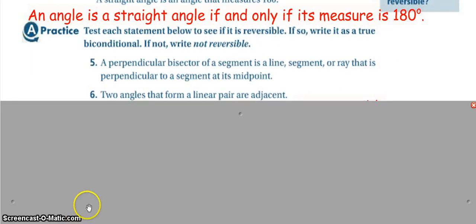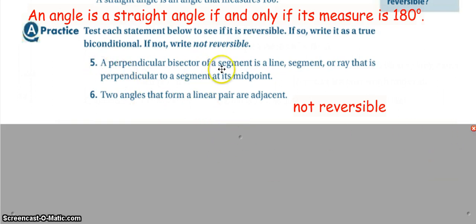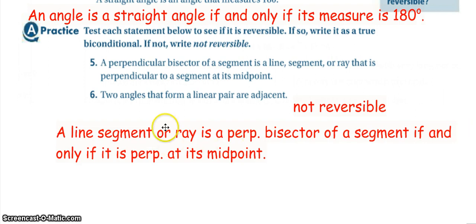Look at problems five and six to decide if they are reversible. For number six: two angles that form a linear pair are adjacent — but that is not always true, because if we flip it, 'angles are adjacent if they form a linear pair' is not necessarily always true. For number five: a perpendicular bisector of a segment is a line, segment, or ray perpendicular to the segment at its midpoint. Flipping it, 'a line, segment, or ray perpendicular to a segment at its midpoint is the perpendicular bisector' — that is true. So we can write the bi-conditional: a line, segment, or ray is a perpendicular bisector of a segment if and only if it is perpendicular to the segment at its midpoint.